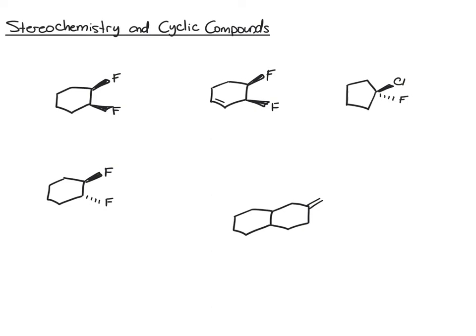Here we're going to look at the stereochemistry of cyclic compounds, meaning the chiral centers are on a carbon of the ring. For the most part it's not much different than what we've been doing — you're going to follow the same rules and logic. Let's start with the first example on the top left. If it helps, you can draw in your hydrogens at these 3D centers.